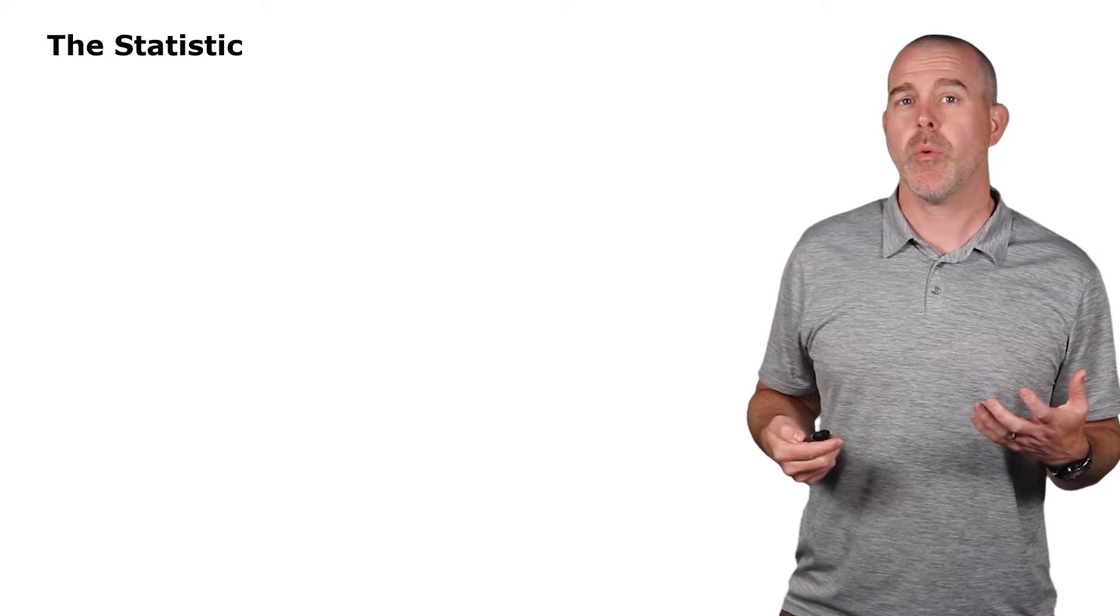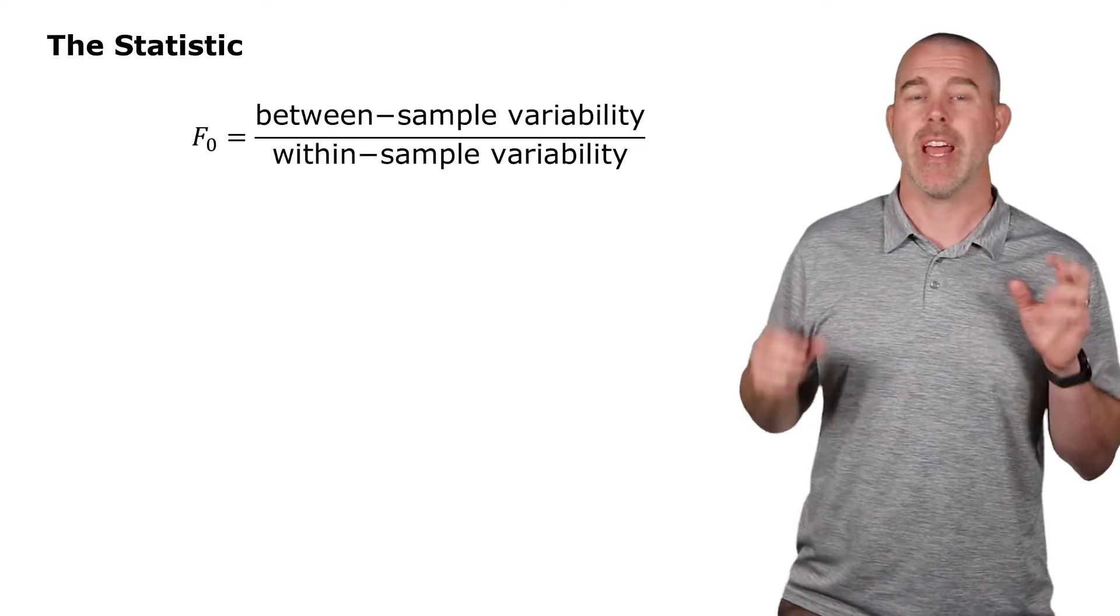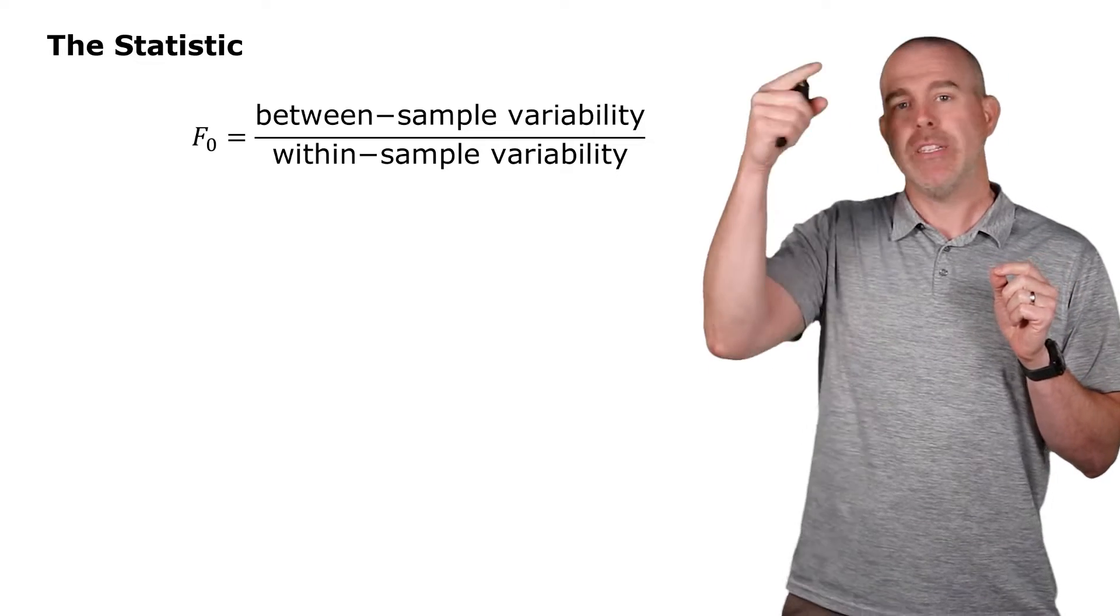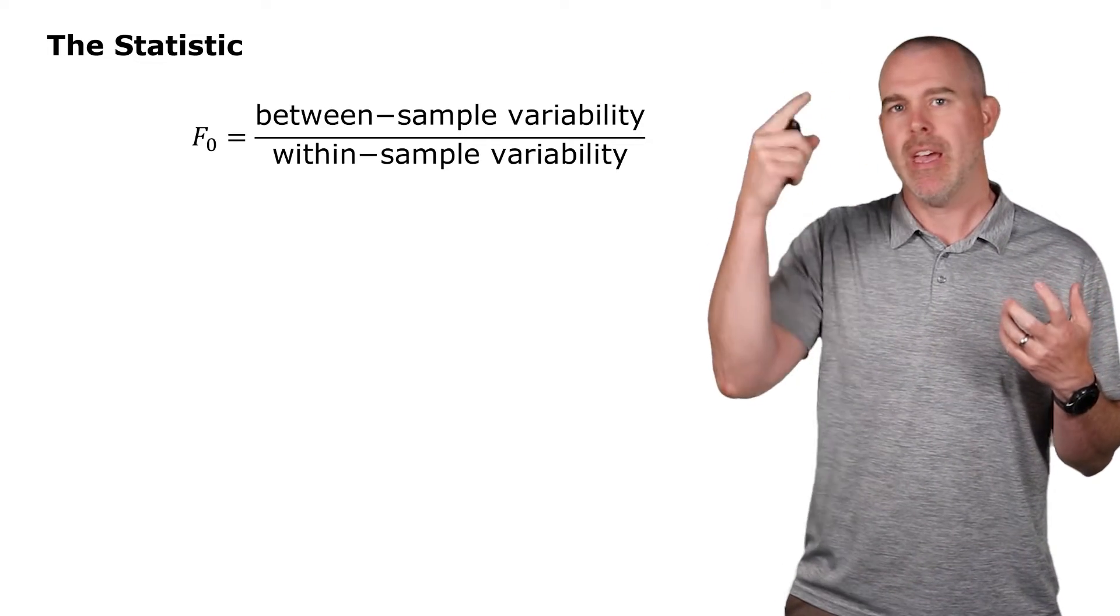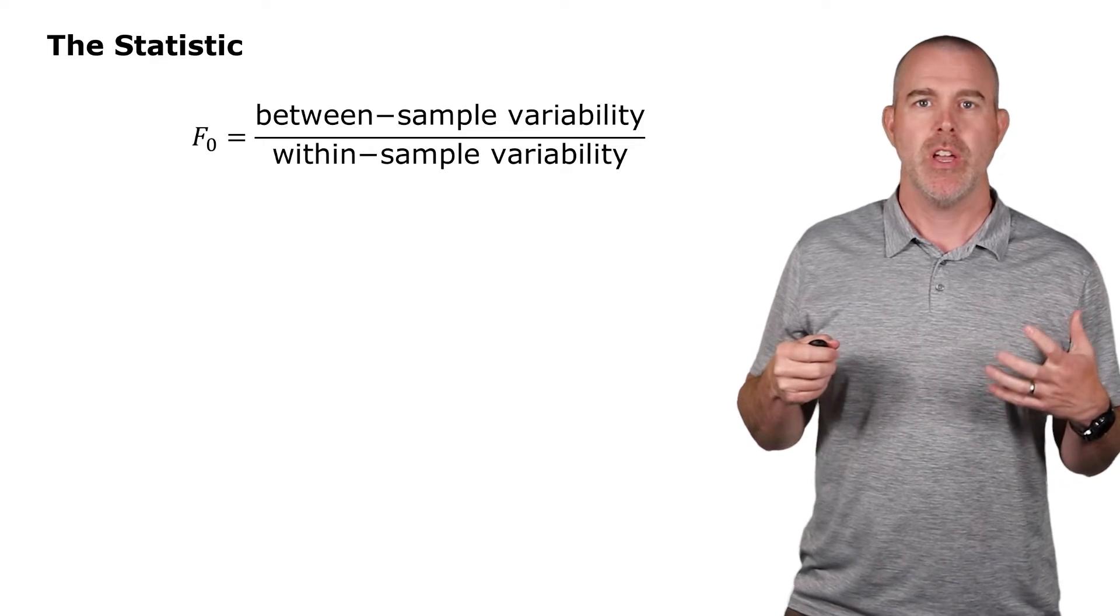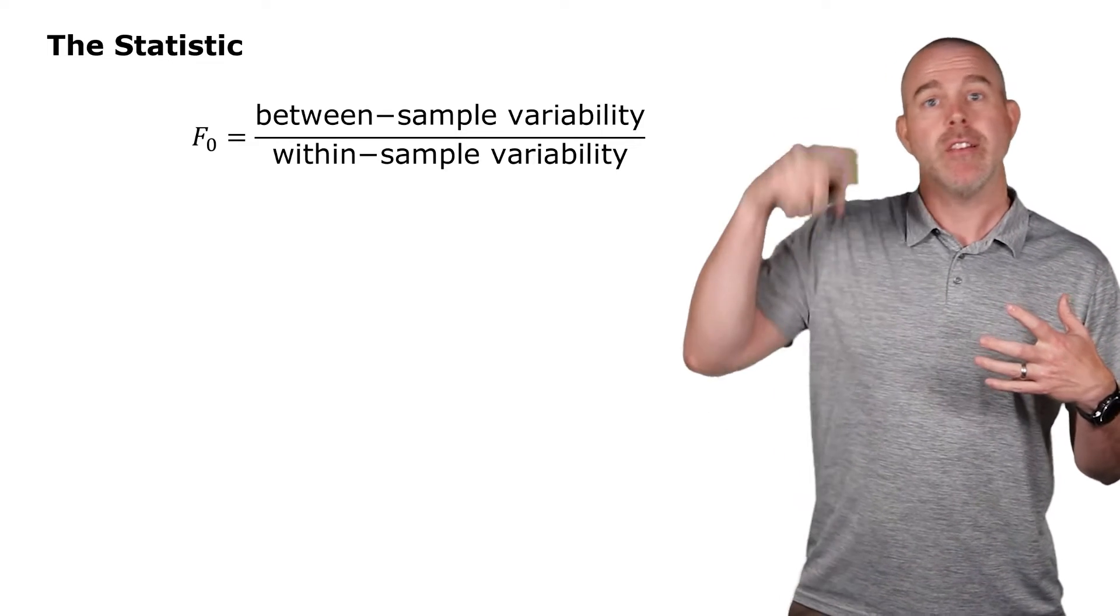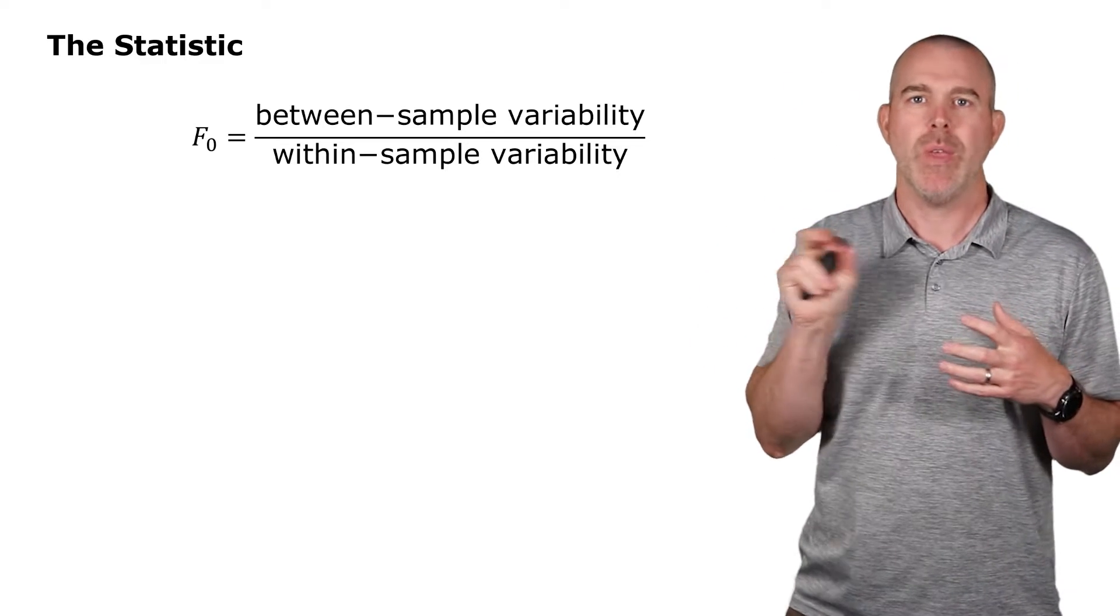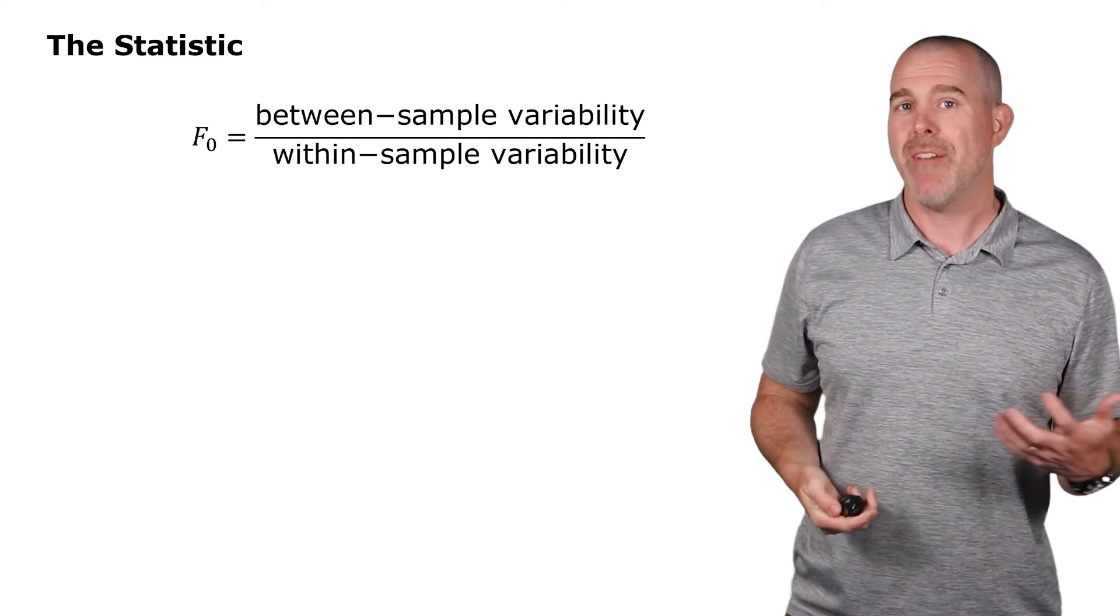So we need some theory for this test. The statistic we're going to use is an F statistic. I'm not going to give a formula here, but the basic idea is you look between sample variability, and you divide that by the variability within the sample. So a big one here means there's more between sample variability than there is within the sample.